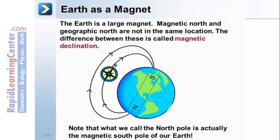Note, what we call true north pole, or the north pole on the Earth, is actually the magnetic south pole of our Earth. It's just that the north end of a compass needle points in that direction.